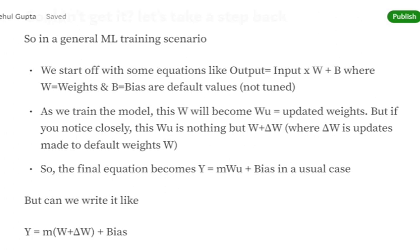If you're still confused, let's take a step back and look at how weight updates work. Usually, output equals input into the machine learning model times weights plus bias.